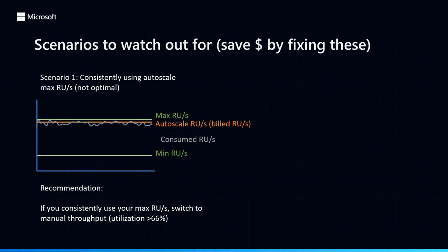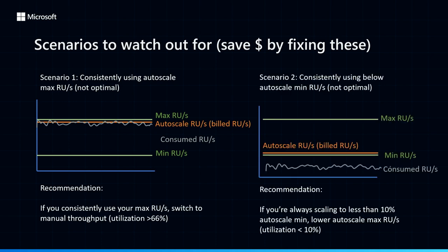Now that you've seen how to choose between manual and autoscale, I want to call out two other scenarios that sometimes come up. The first one is if you're on autoscale today and you're always scaled to the max, that's actually a sign you should use manual-provisioned throughput. If you go ahead and do that, you'll save cost immediately by provisioning the same amount of RUs but just getting a lower unit rate.